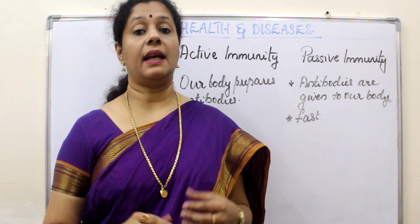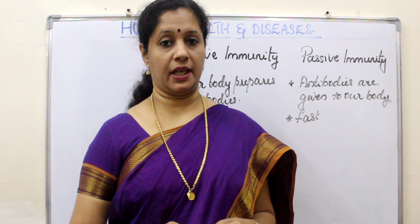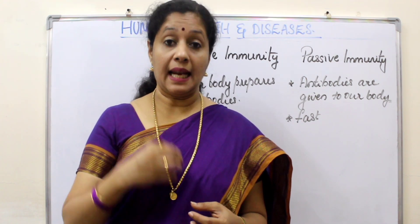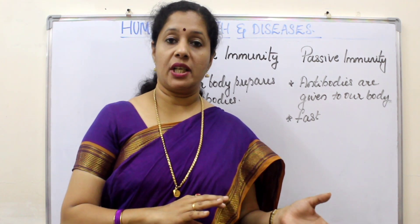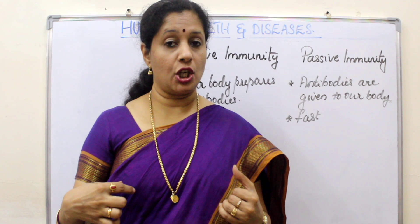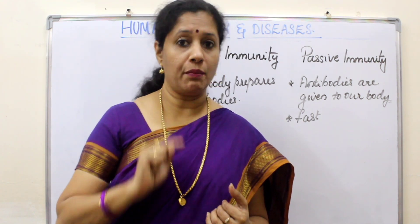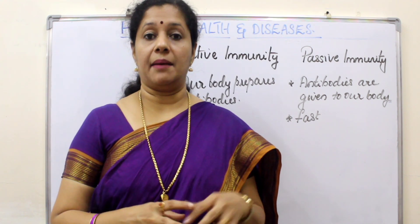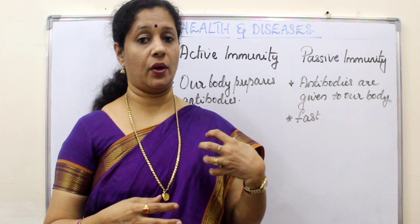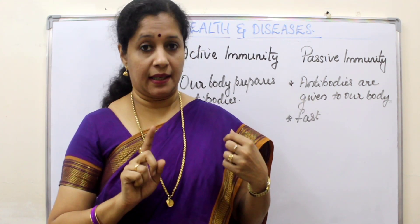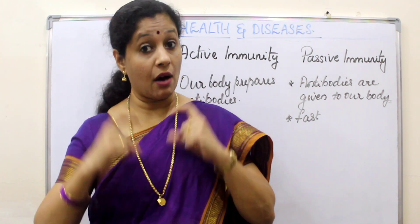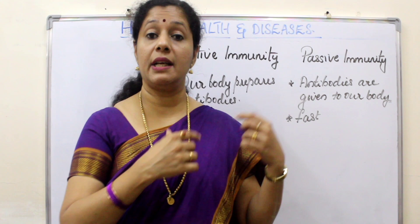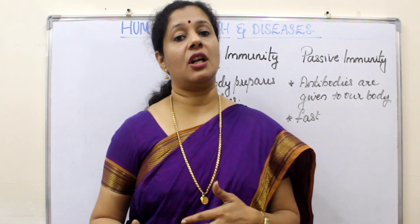Acquired immunity can be of two types: active immunity and passive immunity. As the name indicates, active means our immune system is actively producing an antibody against a pathogen — as in the case of chickenpox, our own body makes the antibody. Since we are making our antibodies, we are active. Whereas, passive is when antibodies are administered into our body — we are not making them, they are given to us. Pre-formed antibodies are given to us, and it can be natural or artificial.